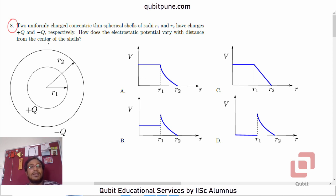The problem is: two uniformly charged concentric thin spherical shells of radii R1 and R2 have charges +Q and -Q respectively. How does the electrostatic potential vary with distance from the center of the shells? R1 is smaller than R2 as we can see, shell R1 carries a positive charge and shell R2 carries a negative charge, and we have four options with us.